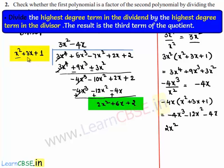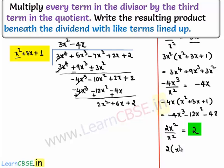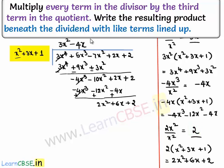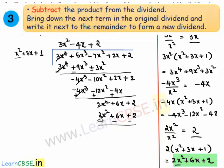The new dividend has highest degree term 2x², and the highest degree term of the divisor is x². On dividing them we get 2. So 2 multiplied by the divisor x² plus 3x plus 1 gives 2x² plus 6x plus 2. So 2 can be written at the place of the quotient, and this product, 2x² plus 6x plus 2, is written here. On subtracting, 2x² and minus 2x² cancel, 6x and minus 6x cancel, and 2 and minus 2 cancel, so this becomes 0.